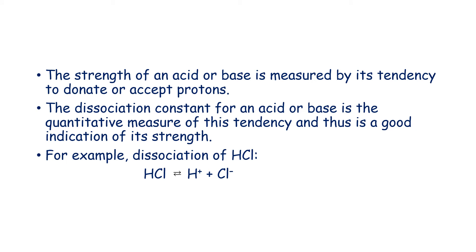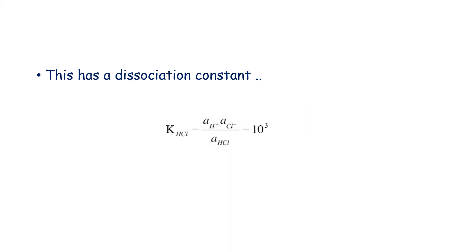The strength of an acid or base is measured by the tendency to donate or accept protons. The dissociation constant for an acid or base is a quantitative measure of this tendency and thus is a good indication of the strength. For example, in the dissociation of HCl, HCl gives you H plus plus Cl minus and this has a dissociation constant given by KHCl equals activity of H plus into activity of chloride divided by activity of HCl to give you 10 to the power of 3.